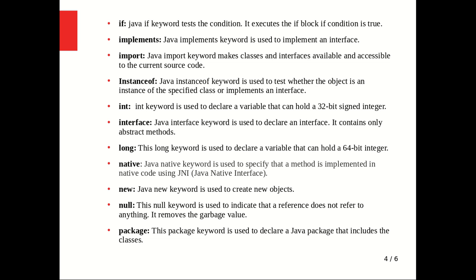The native keyword is used to specify that a method is implemented in native code using JNI (Java Native Interface). The new keyword is used to create a new object — for example, to create an object of class Hello we write: Hello h1 = new Hello(). The null keyword is used to indicate that a reference does not refer to anything; null only indicates that the reference does not refer to anything.